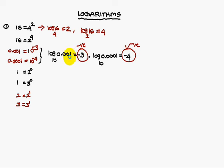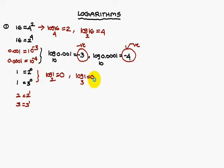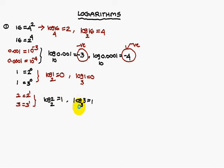So observe that the logarithm of some numbers gives negative numbers. Similarly, log 1 base 2 is 0, and log 1 base 3 is also 0. Here, log 2 base 2 is 1, and log 3 base 3 is 1.